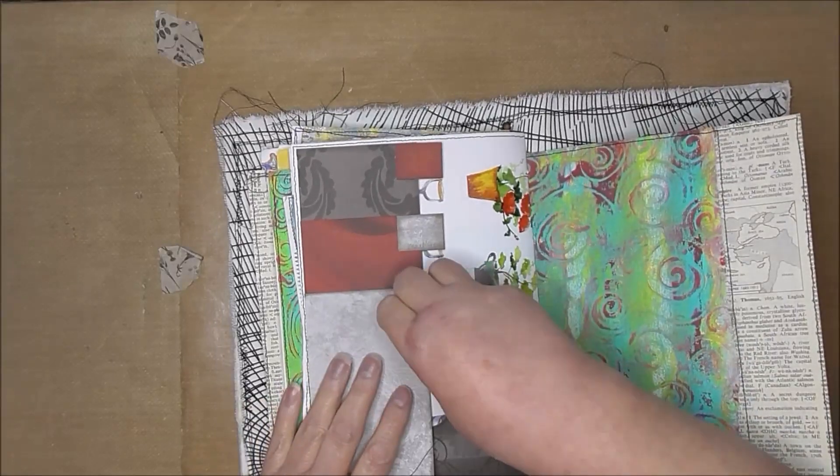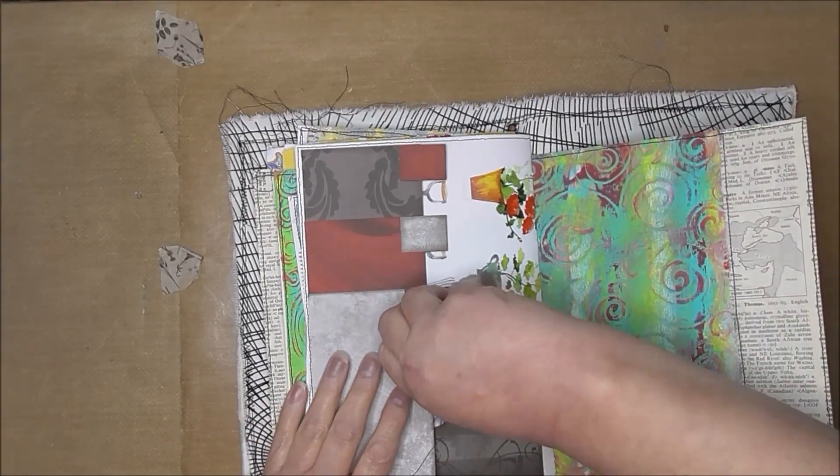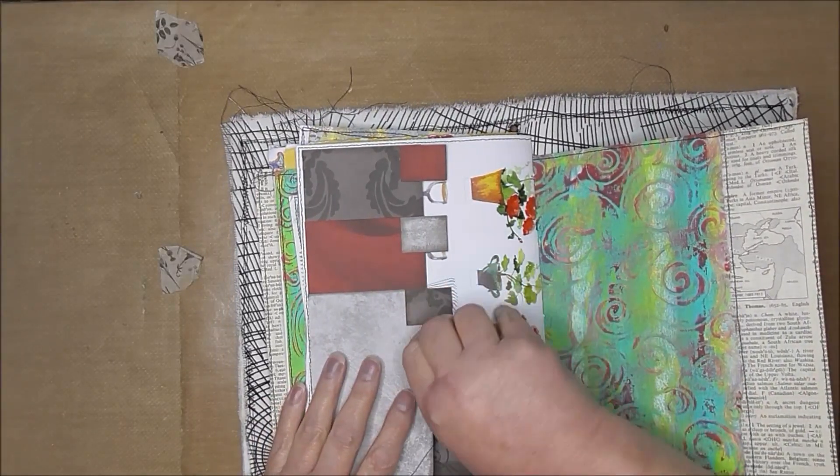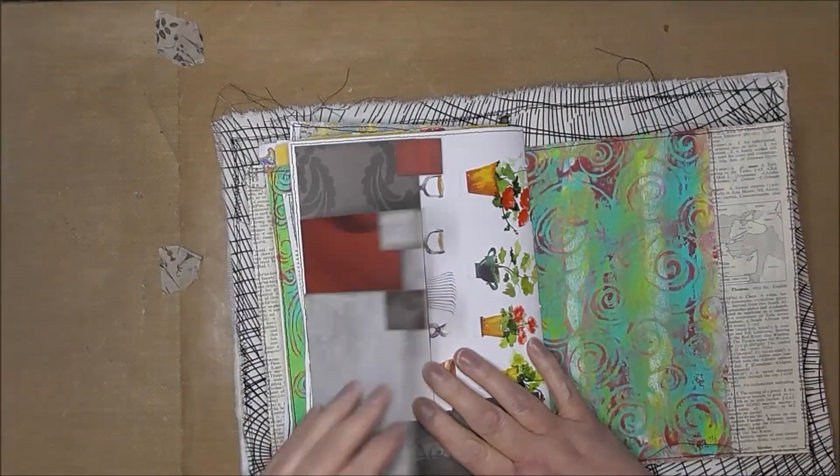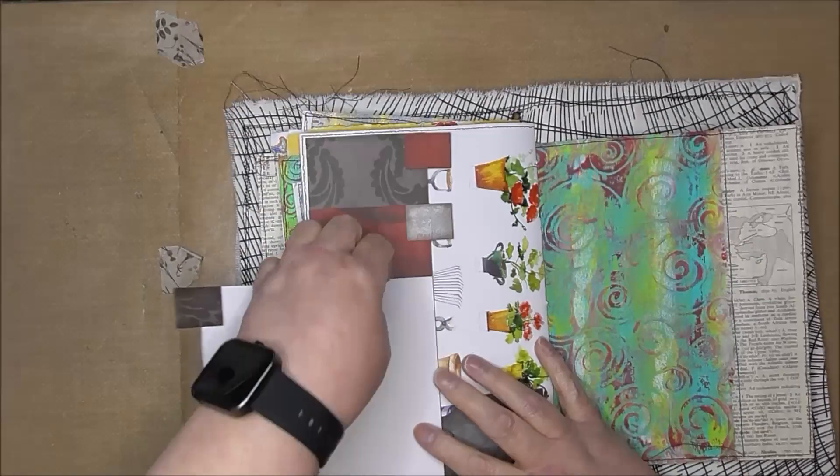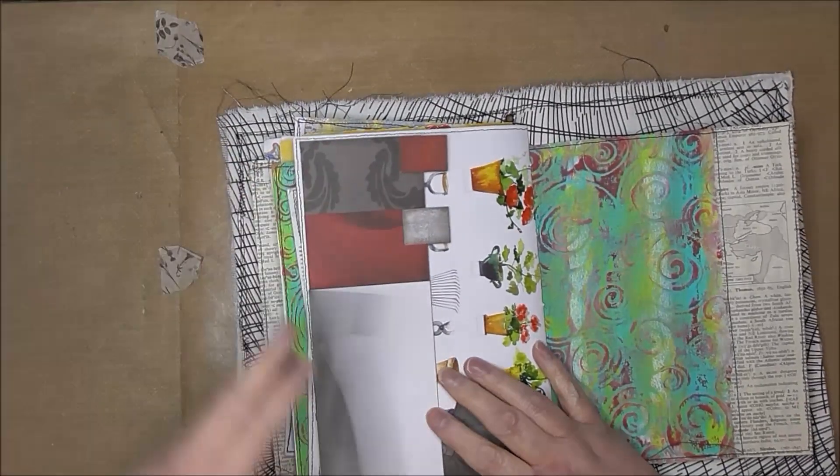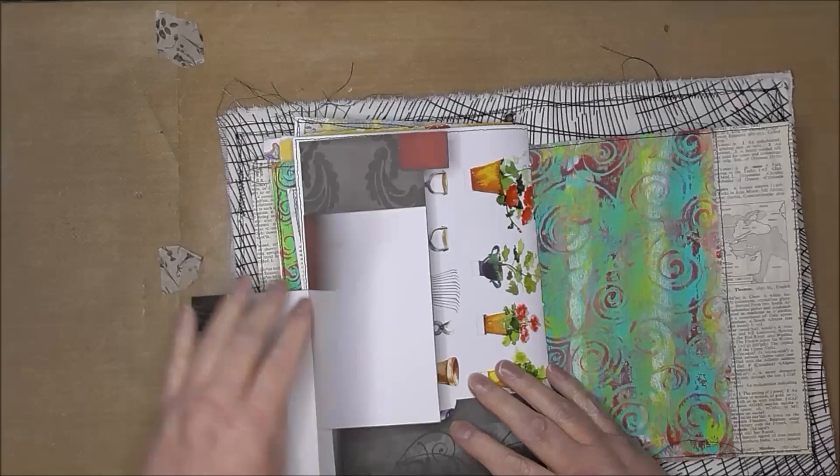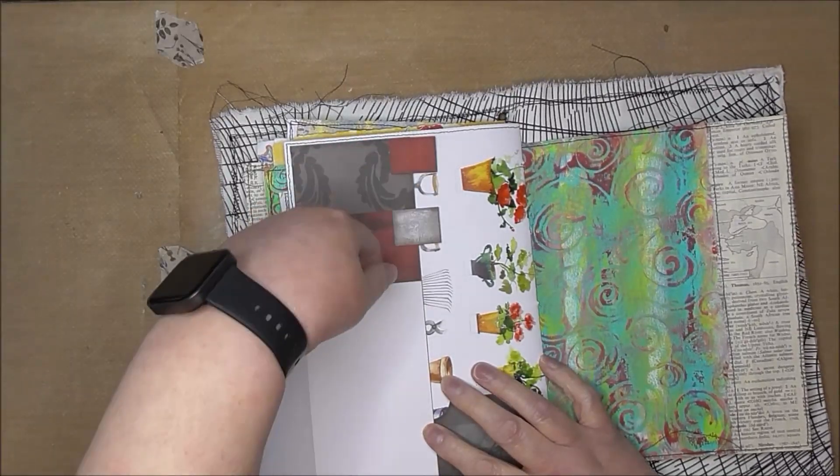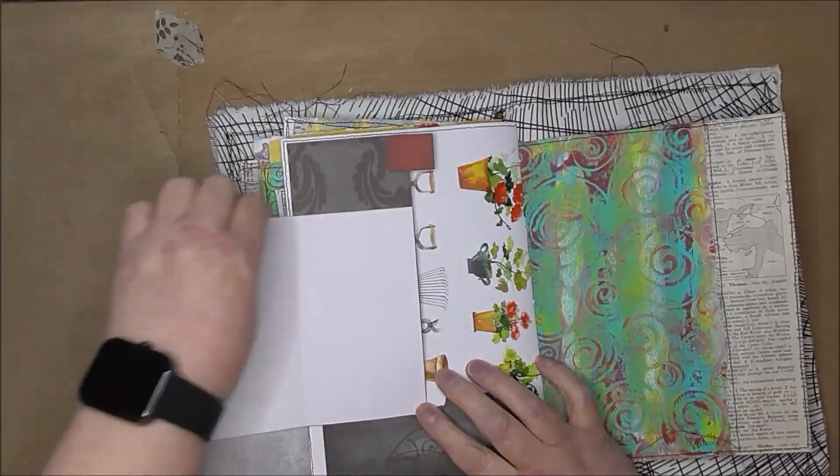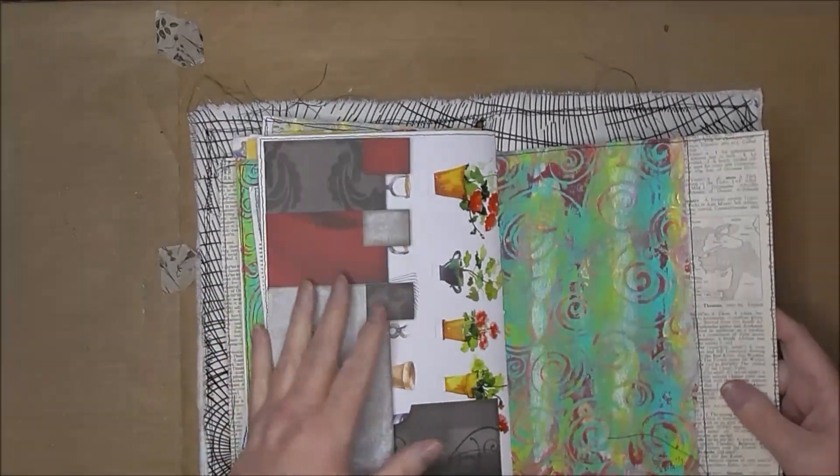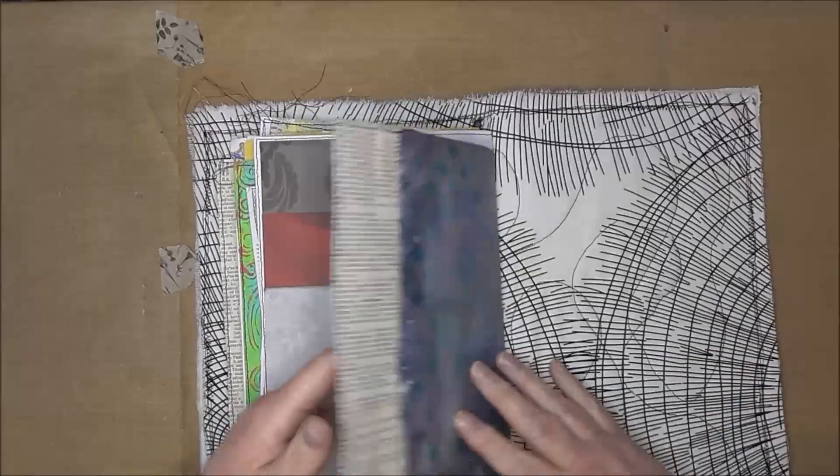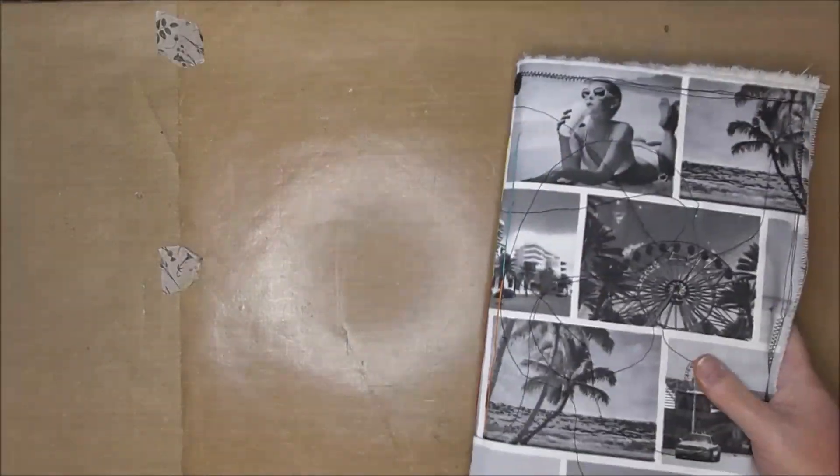And then this is a triple layer journaling spot with pockets in between each. So we've got flip open, the pocket, flip open, pocket, flip open, and then a pocket underneath. So that is the 2021 journal.